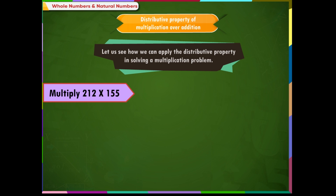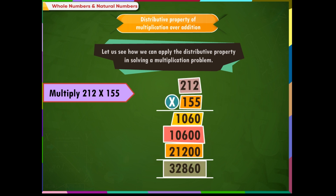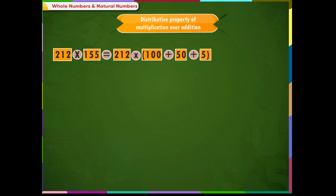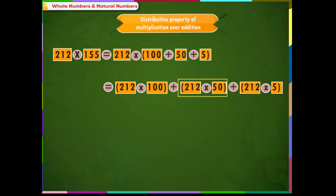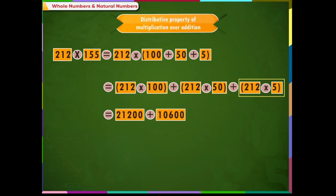Let us apply the distributive property to solve: multiply 212 into 155. We break 155 into three parts — 100, 50, and 5 — inside the bracket. We then multiply in parts: 212 multiplied by 100, plus 212 multiplied by 50, plus 212 multiplied by 5, which equals 21,200 plus 10,600 plus 1,060, equaling 32,860. Thus, our calculation becomes much easier using this property.